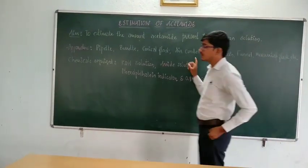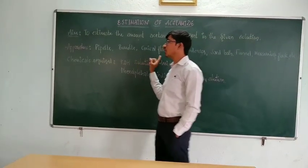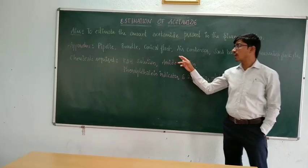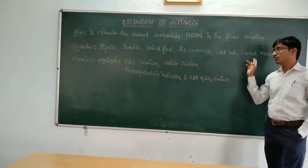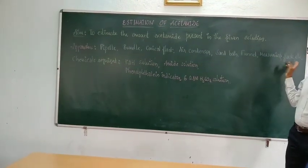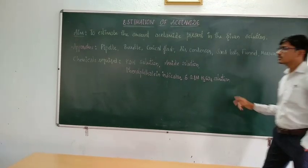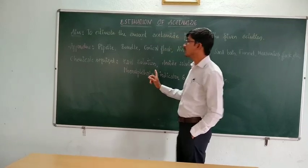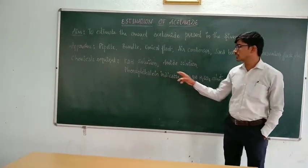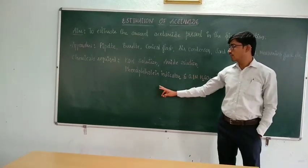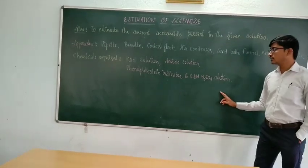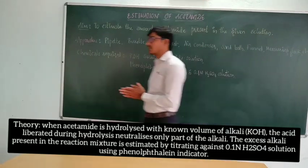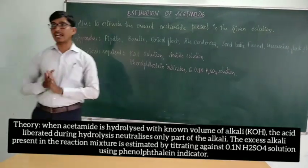The apparatus required for the estimation of acetamide are: pipette, burette, conical flask, air condenser, sandbar, funnel, measuring flask and etc. Similarly, the chemicals required for the experiment are: KOH solution, amide solution, phenolphthalein indicator, and 0.1N H2SO4 solution.